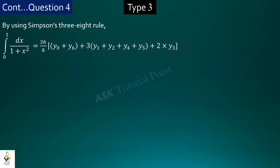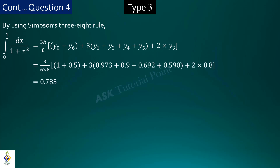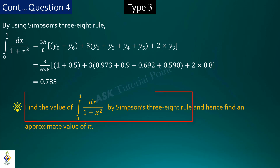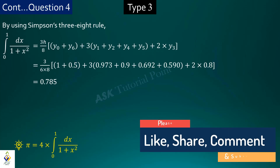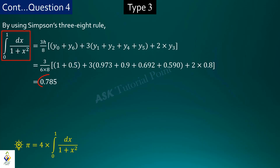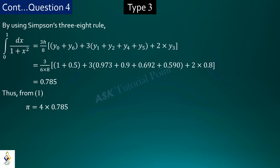Applying Simpson's three-eighth rule to find the integration from 0 to 1 of dx upon (1 plus x squared), and placing the values in the table with calculations, we find 0.785. From equation 1, pi equals 4 times the integration from 0 to 1 of dx/(1 plus x squared), so pi equals 4 times 0.785, which gives pi approximately equal to 3.141.